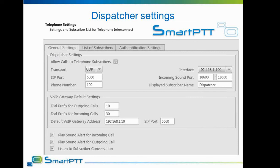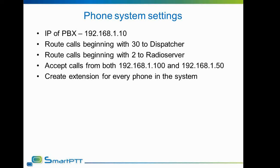Now we move on to the phone system itself. Since phone system settings differ for different phone systems, only the main settings will be mentioned here. The PBX should reside at 192.168.1.10. Prefixes must be set so that calls beginning with 30 are redirected to the dispatcher and calls beginning with 2 are rerouted to the radio server. The PBX must accept incoming calls from both the radio server and dispatcher IP. For each phone in the system there should be a special entry called an extension, which gives the opportunity to call individual phone subscribers. In our case, the extension should be made for the phone at IP address 192.168.1.5 with local number 300.